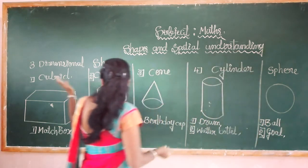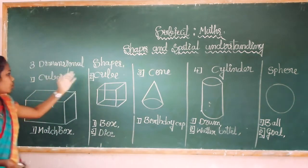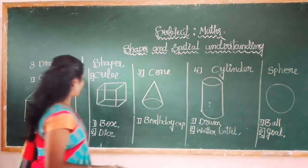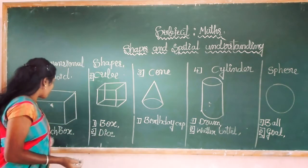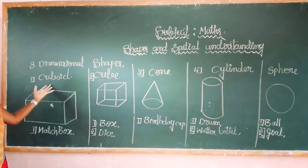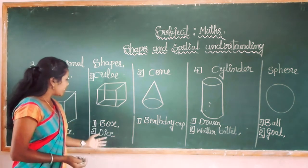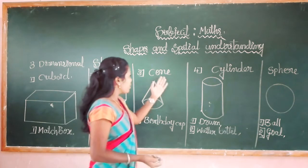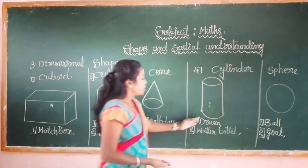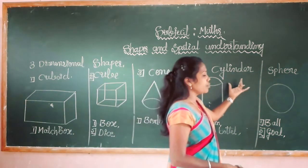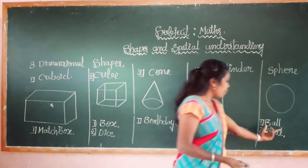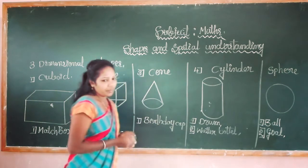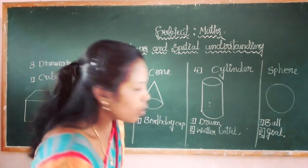Students, there are five three-dimensional shapes: cuboid, cube, cone, cylinder, and sphere. Matchbox is a similar object for the cuboid shape. Box and dice are similar objects for cube shape. Birthday cap is similar to the cone shape. Drum and water bottle are similar objects for the cylinder shape. Ball is similar to the sphere shape.